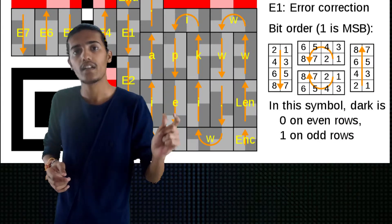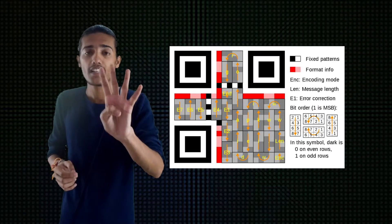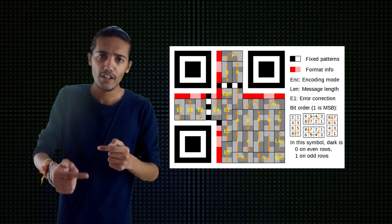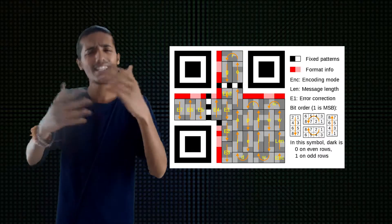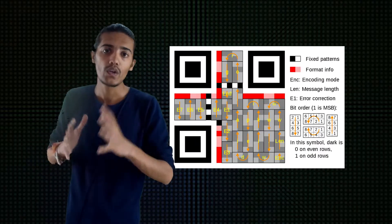अलग-अलग versions की बात करें तो कई patterns होते हैं जैसे alphanumeric pattern, numerical pattern। ISO standards के अनुसार अलग-अलग तरीकों से data store होता है। QR code के right side के नीचे के corner में 4-bit encryption method indicator होता है जो बताता है कि data ASCII values में है, 8-bit configuration में है, alphanumeric है या numerical है — जैसा इस table में दिखाया गया है।